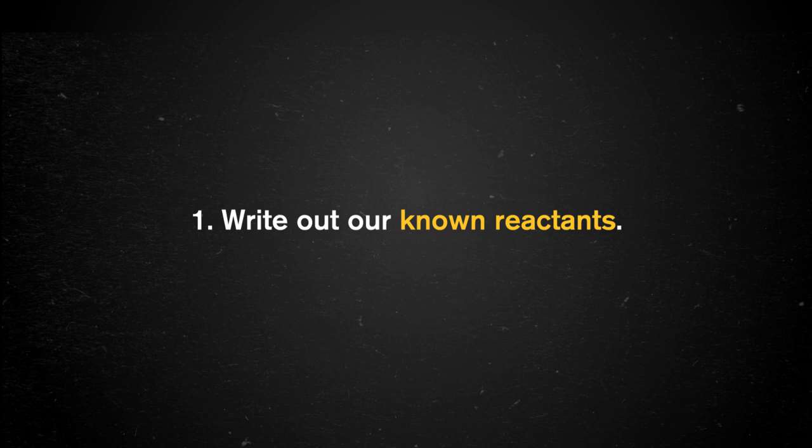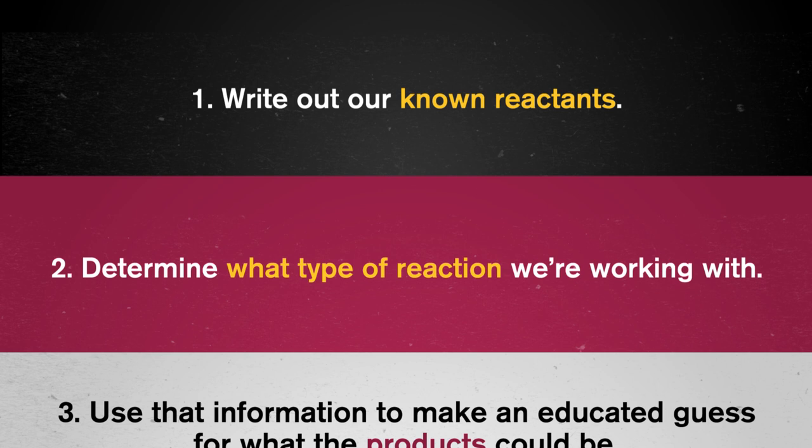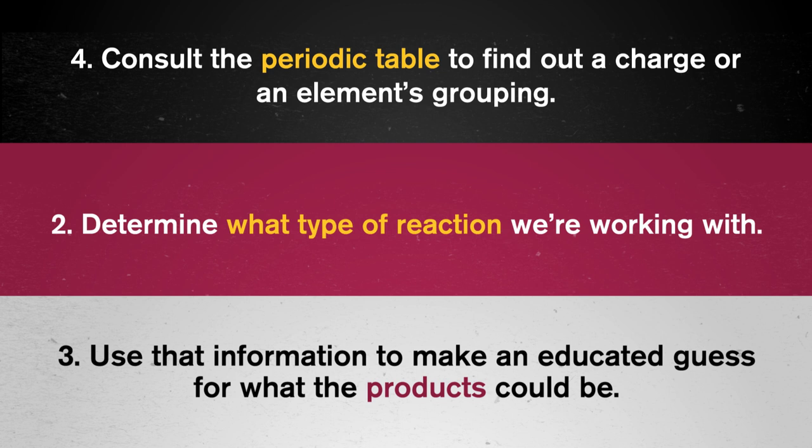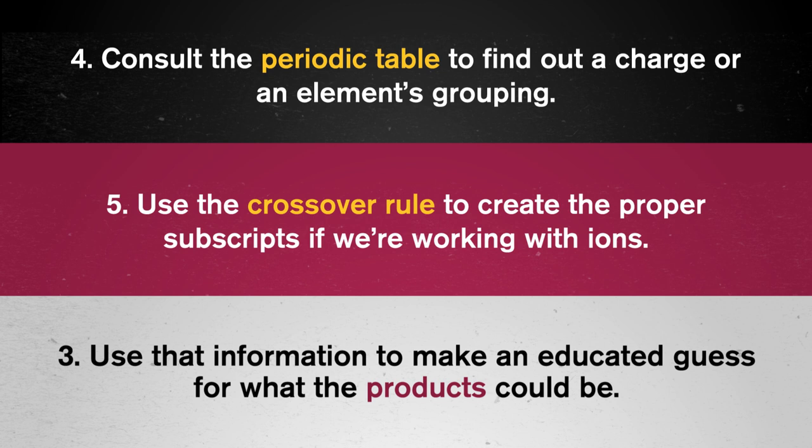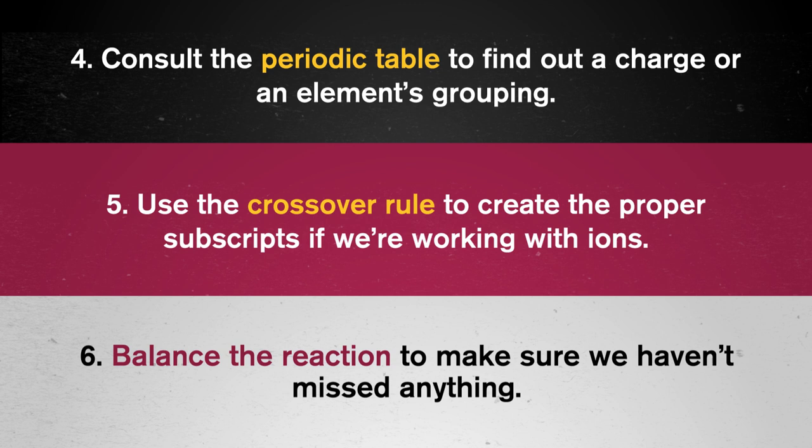The best way to predict the products of reactions is by following these six steps: 1. Write out our known reactants, 2. Determine which reaction type we're working with, 3. Use that information to make an educated guess for what the products could be, 4. Consult the periodic table to find out a charge or an element's grouping, 5. Use the crossover rule to create the proper subscripts if we're working with ions, 6. Balance the reaction to make sure we haven't missed anything.